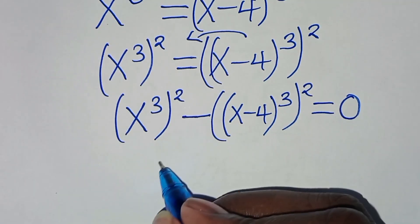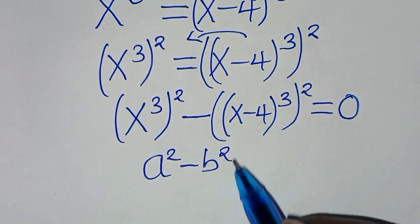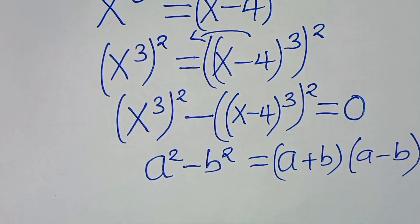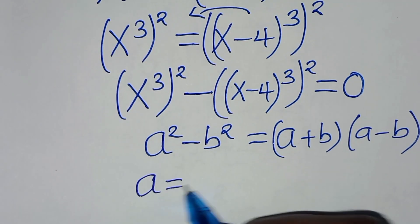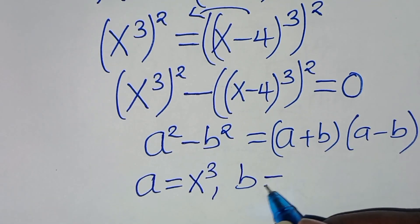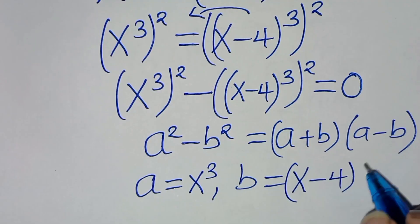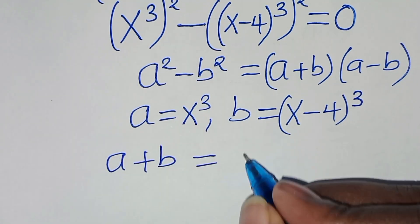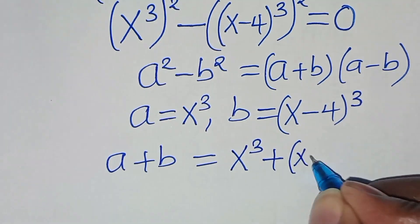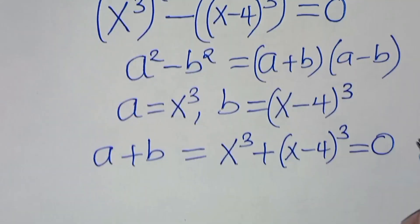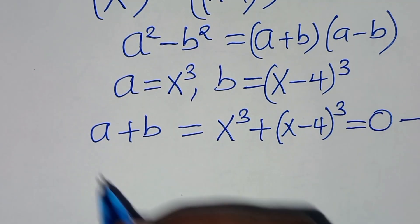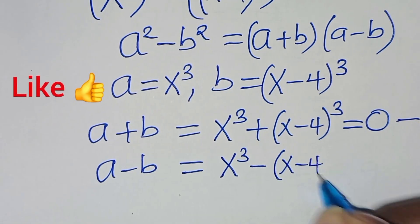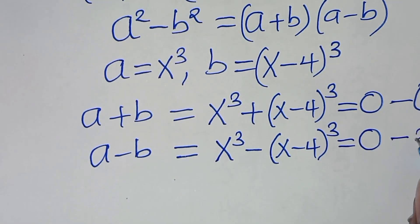This equation is in the form of a squared minus b squared, which is the difference of two perfect squares, which we can express as (a + b)(a - b). From this equation we have that a is equal to x to the power of 3, and b is equal to x minus 4 raised to the power of 3. So a plus b gives us x³ + (x-4)³ = 0 — let's call this equation 1. And a minus b gives us x³ - (x-4)³ = 0 — let's call this equation 2.